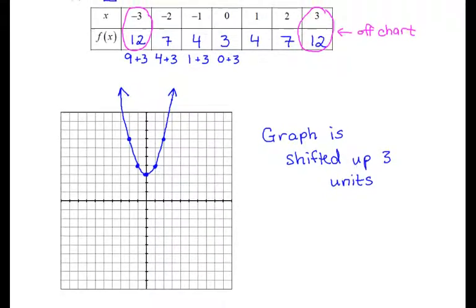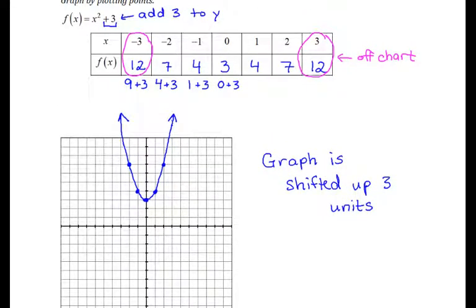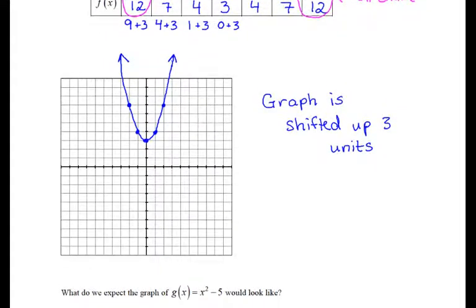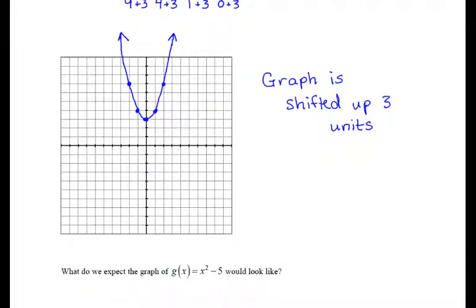Recalling, of course, that our function had a plus 3 after the x squared, it's fairly intuitive that adding 3 to all of our y values will shift the graph up in the positive y direction. We might take a guess what the graph of g of x equals x squared minus 5 would look like at this point. Instead of adding a number to every y value, we would now subtract a number from every y value, and we can guess that this graph would shift down 5 units.